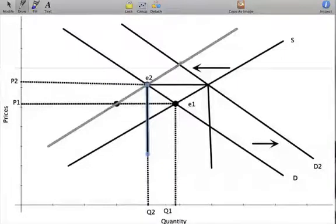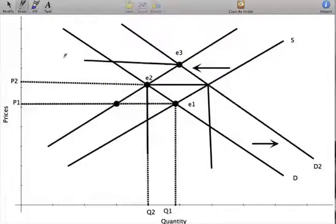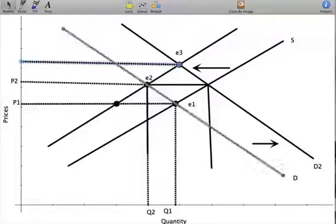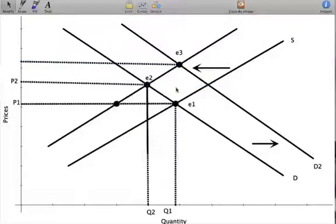So our new equilibrium point, we denote E3, is at a higher price than P2. Let me clean up this graph just a little bit. At our new equilibrium, our equilibrium price is P3...